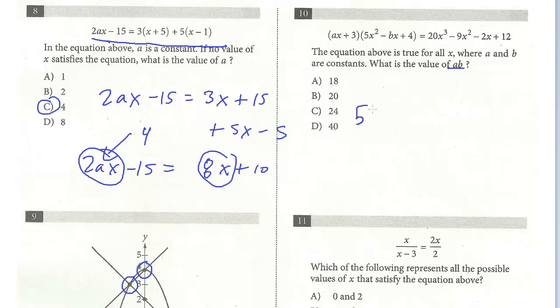We have 5ax cubed. I'm just distributing. Then we have minus abx squared and plus 4ax. Now I'm going to do this inside term. And now we have plus 15x squared minus 3bx plus 12. So this is all the left side. And this equals, I'll just copy this down,